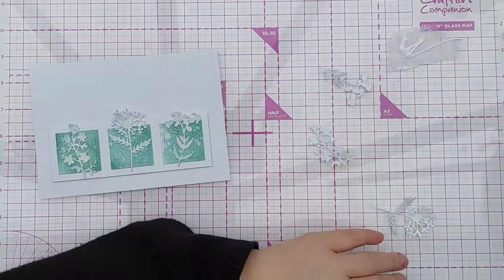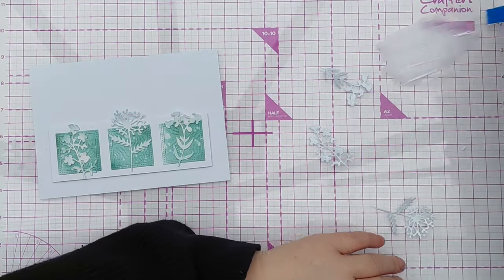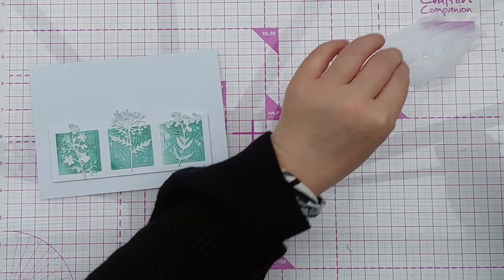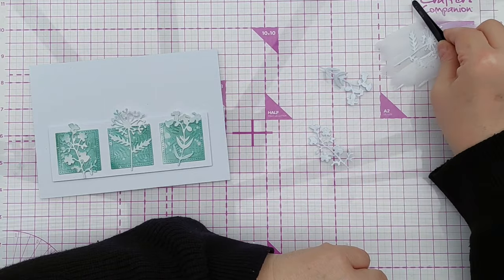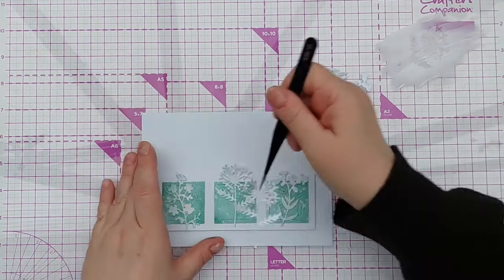Next I added the glossy die cuts on top of the inked die cuts and offset them slightly so that the inked die cuts were still visible. This just added another layer of interest and depth to the card.